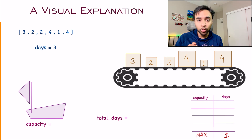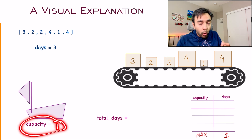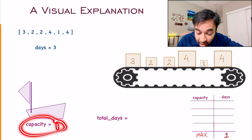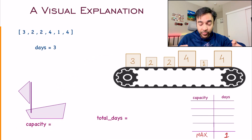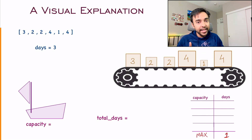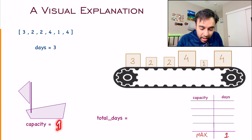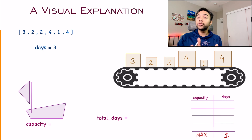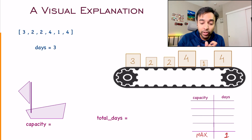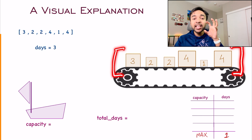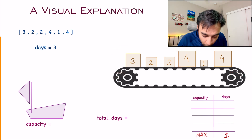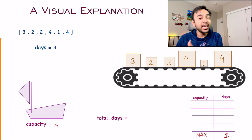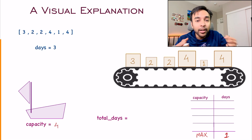But how minimum can you go? Can you take the capacity of one? No, because when the capacity is just one kg, you cannot even load this three kg block — the ship will sink. You will only be able to load just this one kg block. So what is the minimum capacity theoretically that you can take? Theoretically, that value will be the maximum available package that you have. So in this array, the maximum available value is four, so let's say the capacity of the boat that I am taking is four kg.